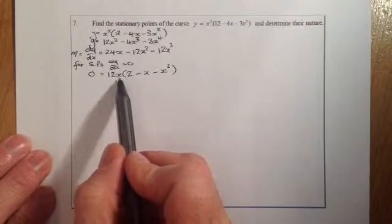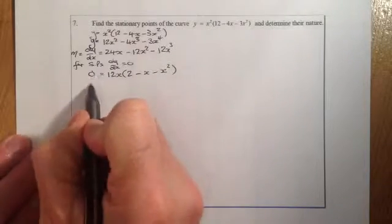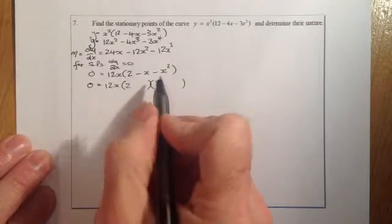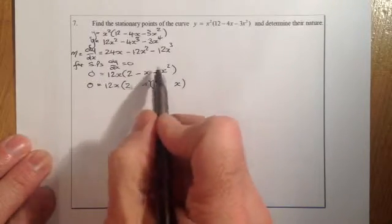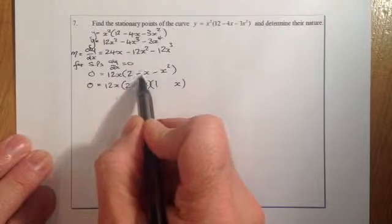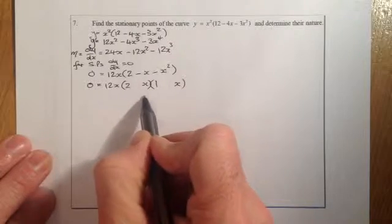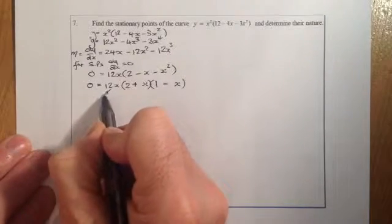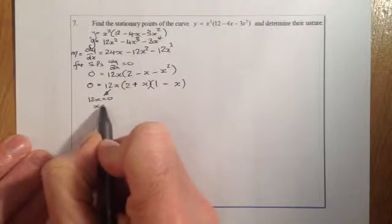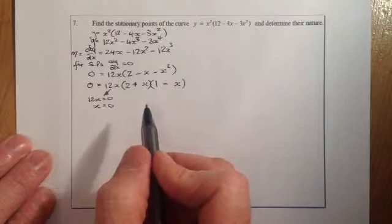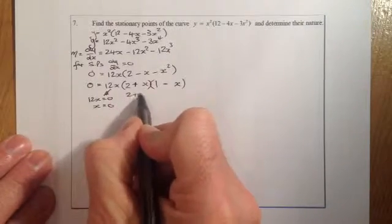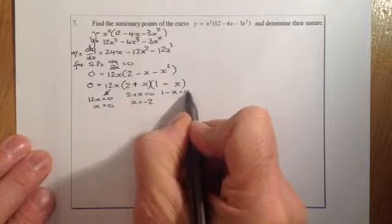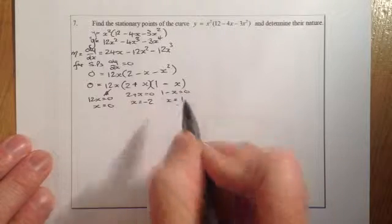I need to factorize this part to find solutions for x. So I've got 12x, and factorizing the quadratic into two brackets gives 12x times (2 plus x) times (1 minus x). From 12x equals 0, x equals 0. From 2 plus x equals 0, x equals minus 2. From 1 minus x equals 0, x equals 1.